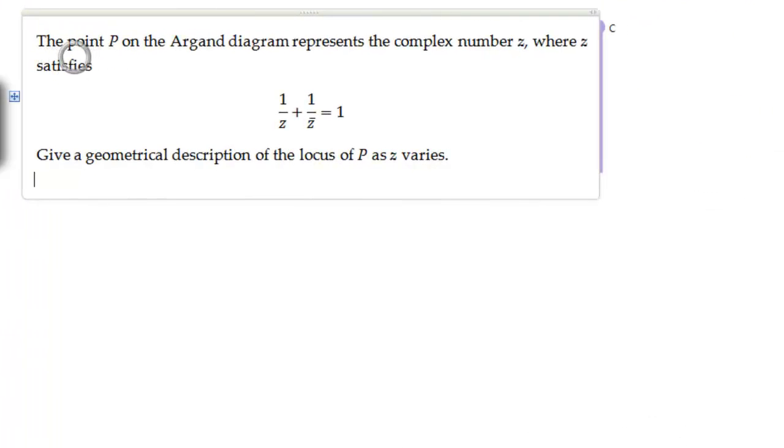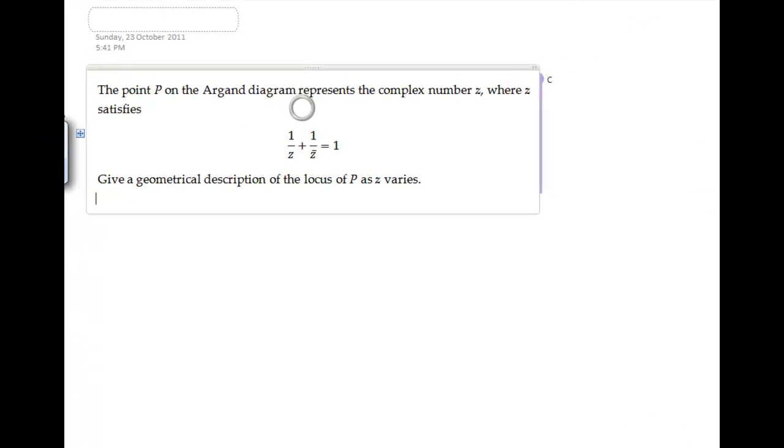As you can see here in the question, it says: does the point P on an Argand diagram represent the complex number Z, where Z satisfies this equation? Give a geometric description of the locus of P as Z varies. In analyzing this question, if you look at that carefully, we are trying to describe the locus of P.